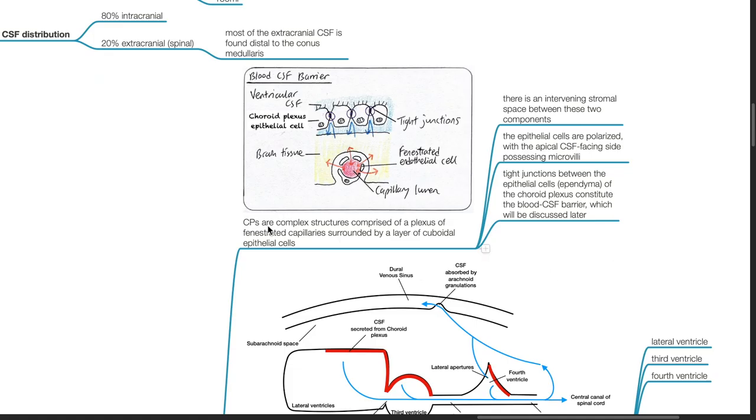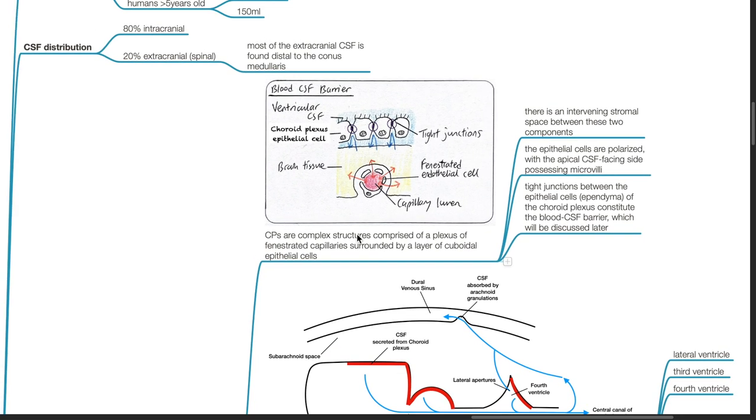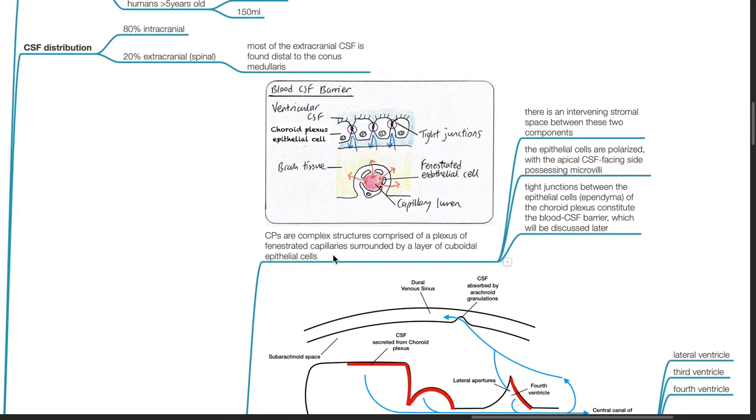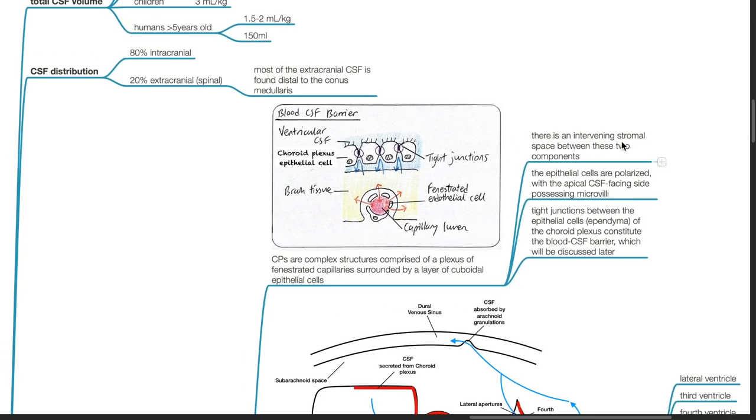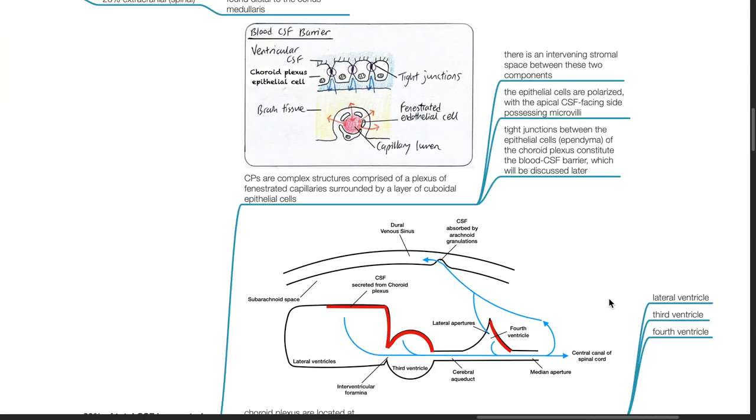Choroid plexus are complex structures comprised of a plexus of fenestrated capillaries, surrounded by a layer of cuboidal epithelial cells. There is an intervening stromal space between these two components. The epithelial cells are polarized, with the apical CSF facing site possessing microvilli. Tight junctions between the epithelial cells of the choroid plexus constitute the blood CSF barrier.